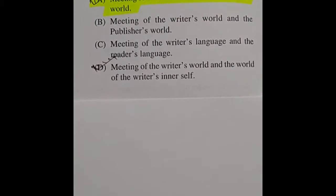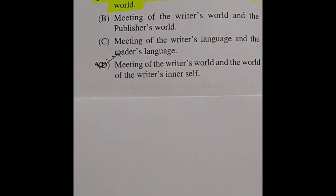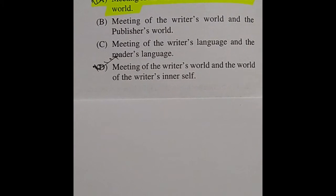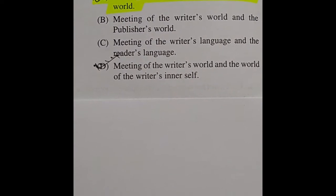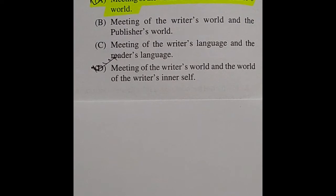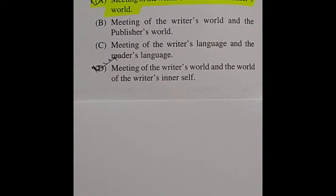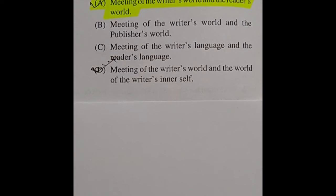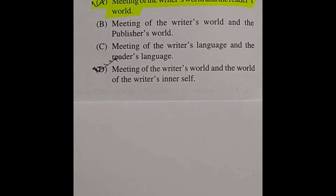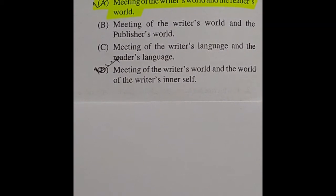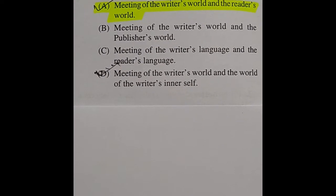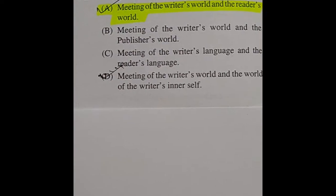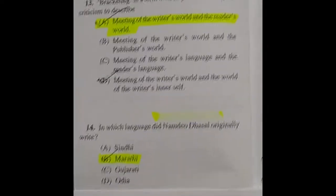Question 13: 'Bracketing' is a term used in phenomenological criticism to describe — the options include meeting of the writer's world and the reader's world, meeting of the writer's world and the publisher's world, meeting of the writer's language and the reader's language, and meeting of the writer's world and the world of the writer's inner self. The right answer is: meeting of the writer's world and the reader's world.